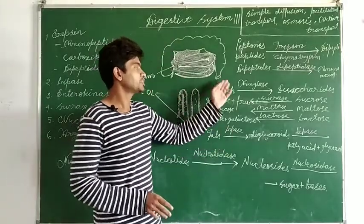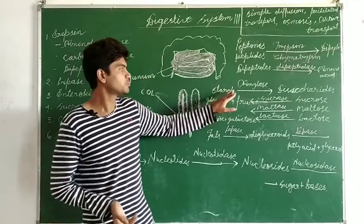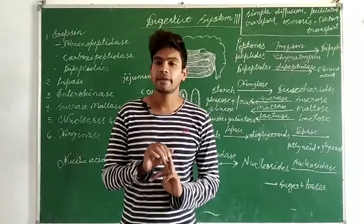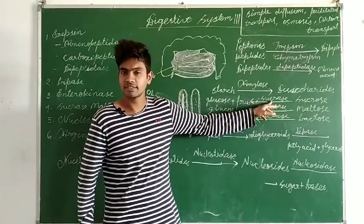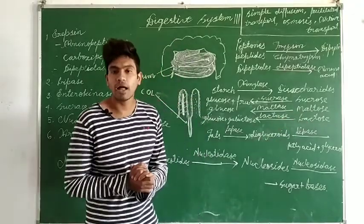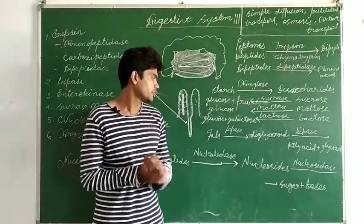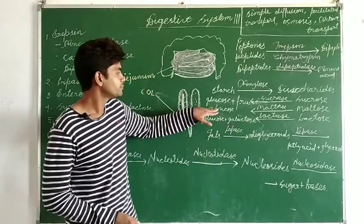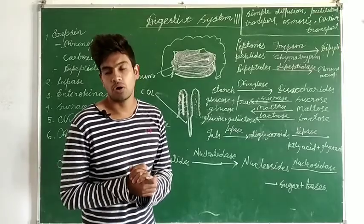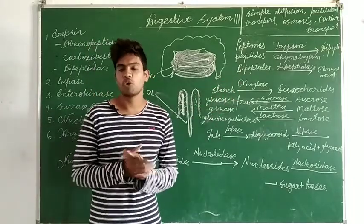For starch: polysaccharides are first broken into disaccharides by amylase. The three types of disaccharides are sucrose, maltose, and lactose. Sucrose is acted upon by sucrase and converted into glucose and fructose. Maltose is acted upon by maltase and converted into glucose. Lactose is converted into glucose and galactose. These monosaccharides are the simplest form of starch absorbed by the small intestine.